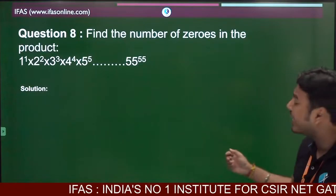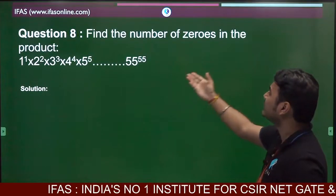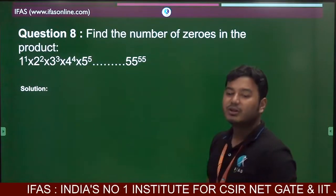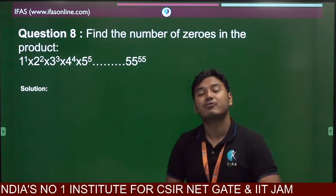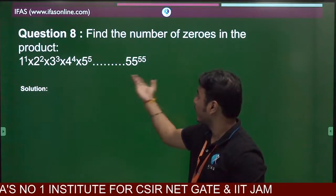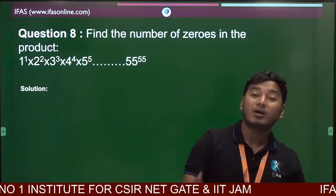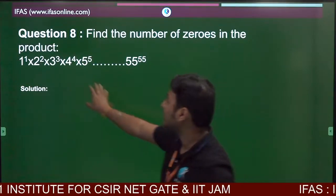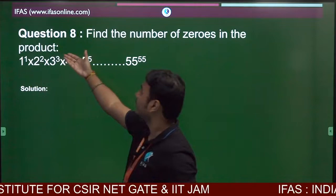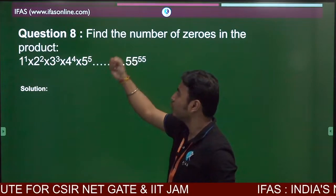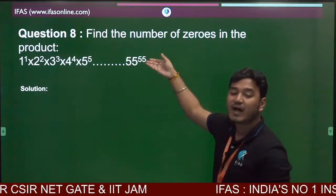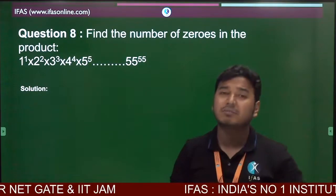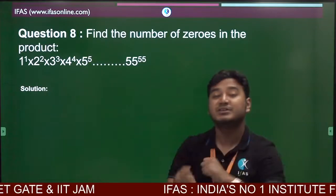Today's question is: find the number of zeros in the product. We have covered finding number of zeros before in this series, but there the problem was a single number. Here we have a product of numbers with a pattern: 1 to the power 1, 2 to the power 2, 3 to the power 3, 4 to the power 4, 5 to the power 5, all the way up to 55 to the power 55. The base and the power are the same.